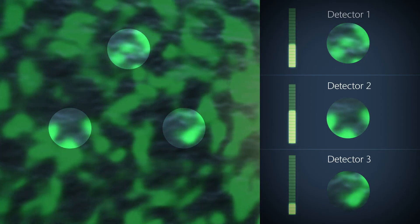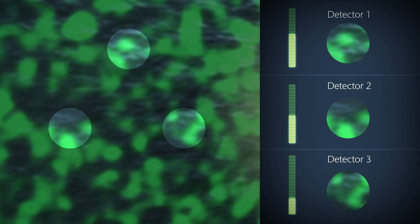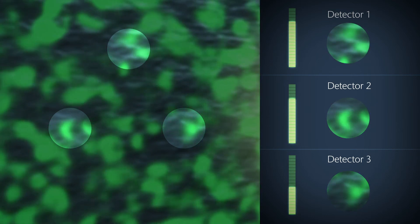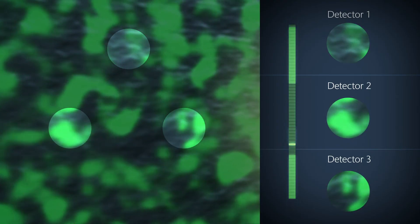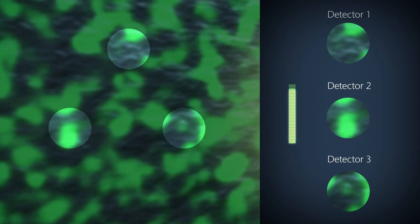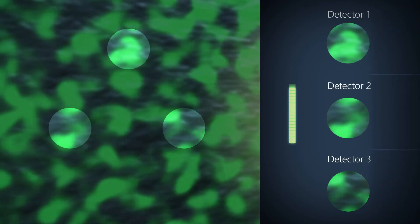For every point in time the signal level varies with the speckle pattern. As the pattern is random, it can be shown that the combination of the signals from the spatially distributed detectors results in a statistically stable signal level.